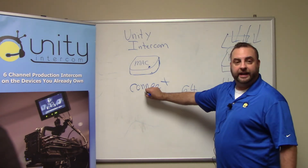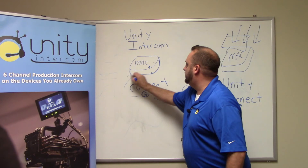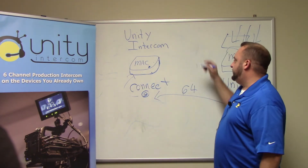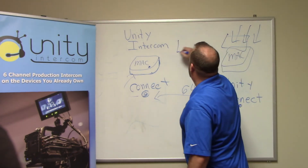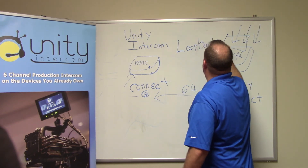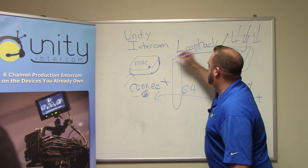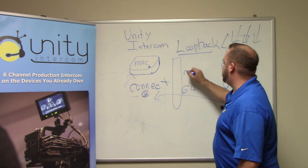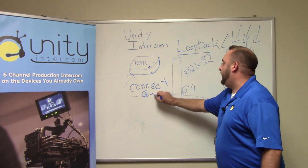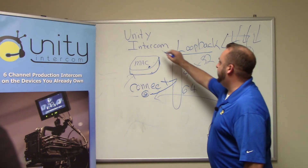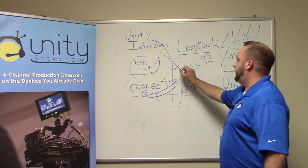We have local event audio going into another Mac computer via Unity Connect, and we send that audio to this Connect at our office location. Now, Unity Connect doesn't directly write to Unity Intercom. So what we need is an aggregate audio device — a software virtual audio device. The one we like to use is Loopback. Loopback by Rogue Amoeba creates a virtual audio device that could be a 32x32 or 64x64. We take Unity Connect and output Connect to Loopback, then we take Unity Intercom and input from Loopback.